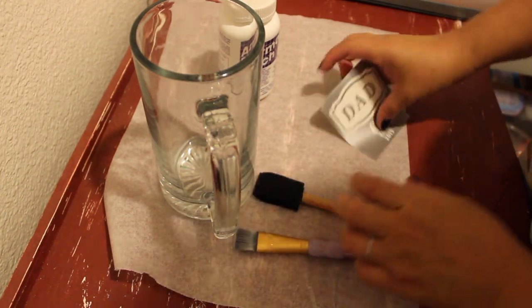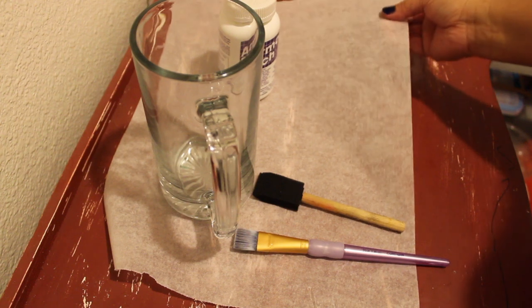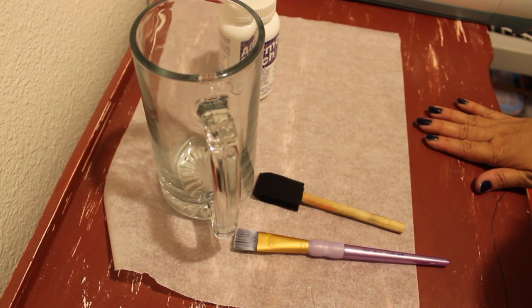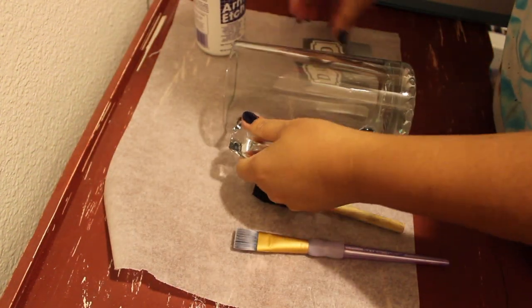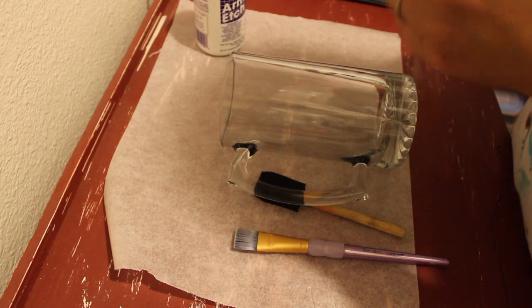I've already cut up the vinyl that I'm going to place on the beer mug and have parchment paper just in case I make a mess. I've already wiped down the glass with rubbing alcohol to make sure the surface is clean. I am now placing the transfer tape on top of the vinyl.